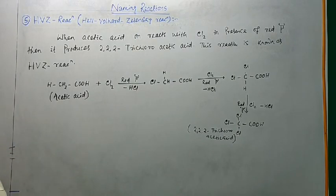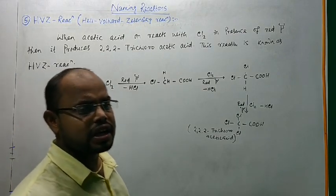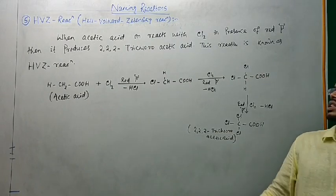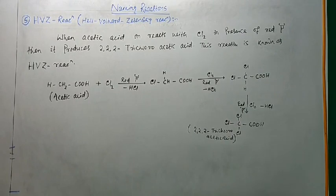When acetic acid reacts with chlorine in presence of red phosphorus, then it produces 2,2,2-trichloroacetic acid. This reaction is known as Hell-Volhard-Zelinsky reaction or HVZ reaction.